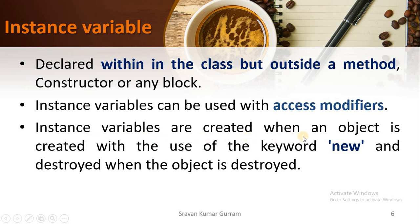Instance variables are created when an object is created with the use of the keyword 'new', and destroyed when the object is destroyed. Simply put, instance variables are created when you create an object of your class with the 'new' keyword, and when the object is destroyed, all its instance variables are also destroyed, because a slot is allocated for instance variables within the object.